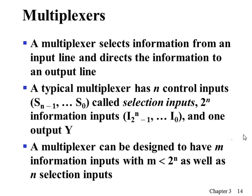In this video we are going to study two more functional blocks: the multiplexers and the demultiplexers. They are completely the opposite in their operations. The multiplexer has N control inputs, which are called the selection inputs, and two-to-the-N information inputs, and then one output. Depending on the control inputs, one of the information inputs is directly connected to one single output. This is called the multiplexer.